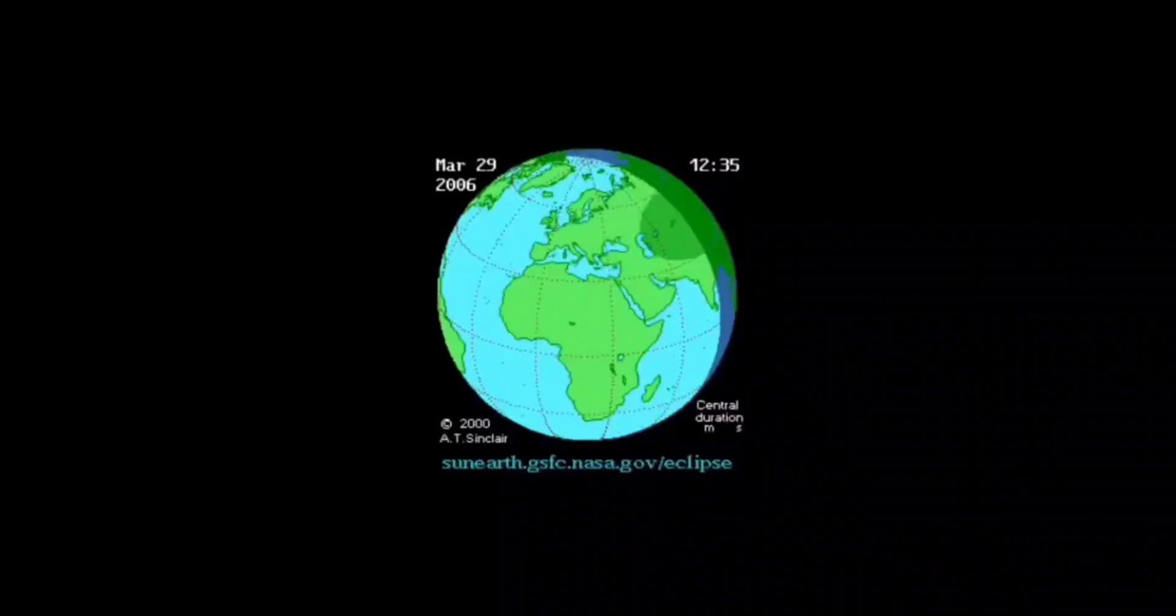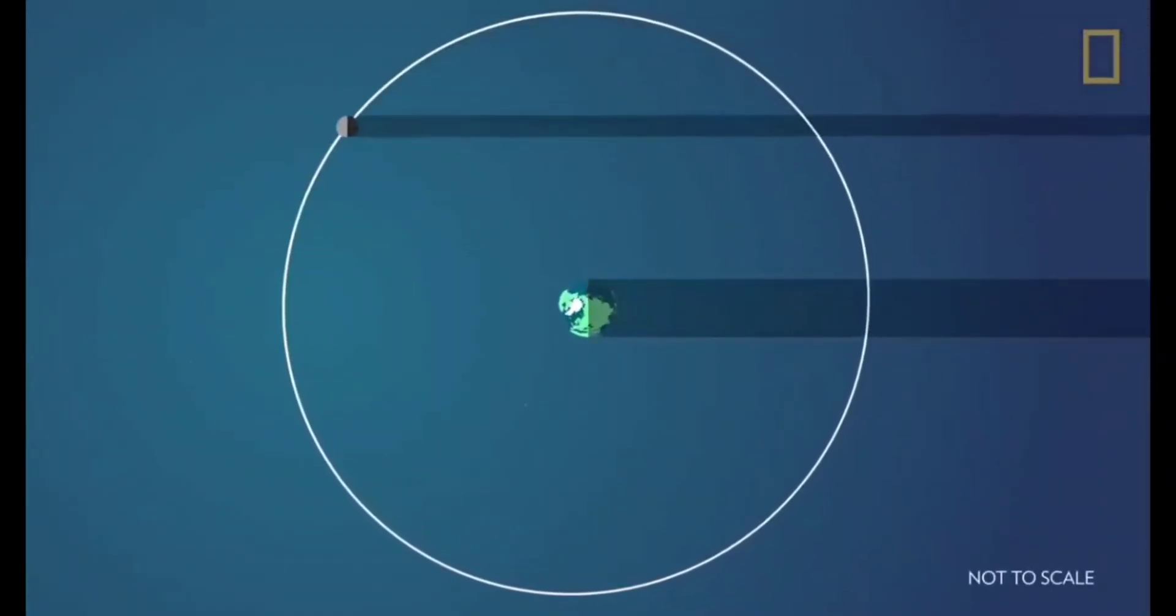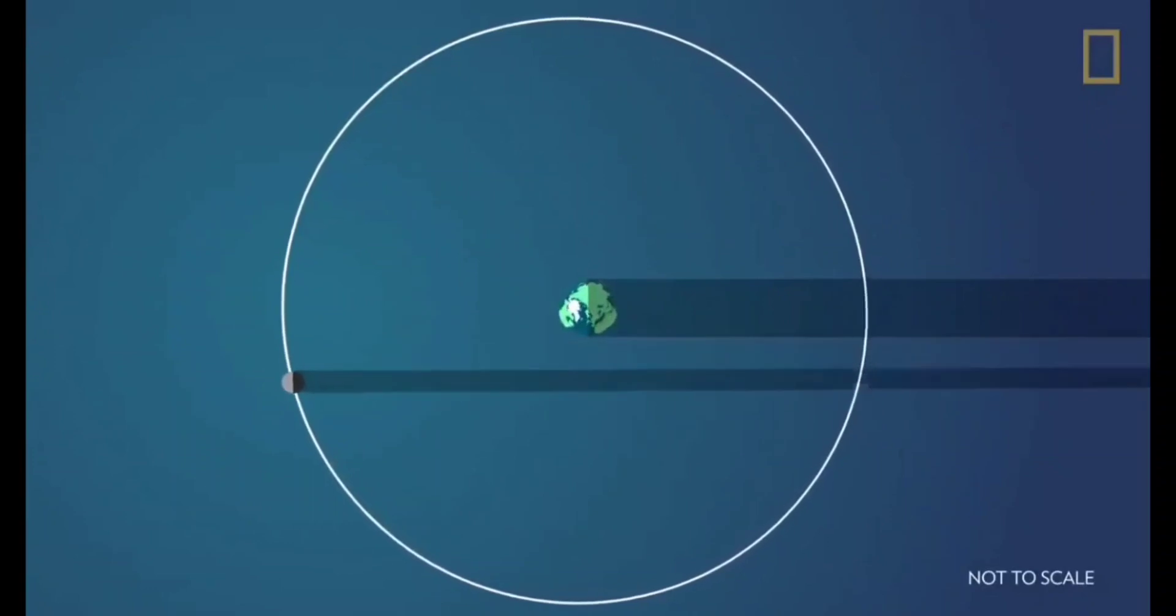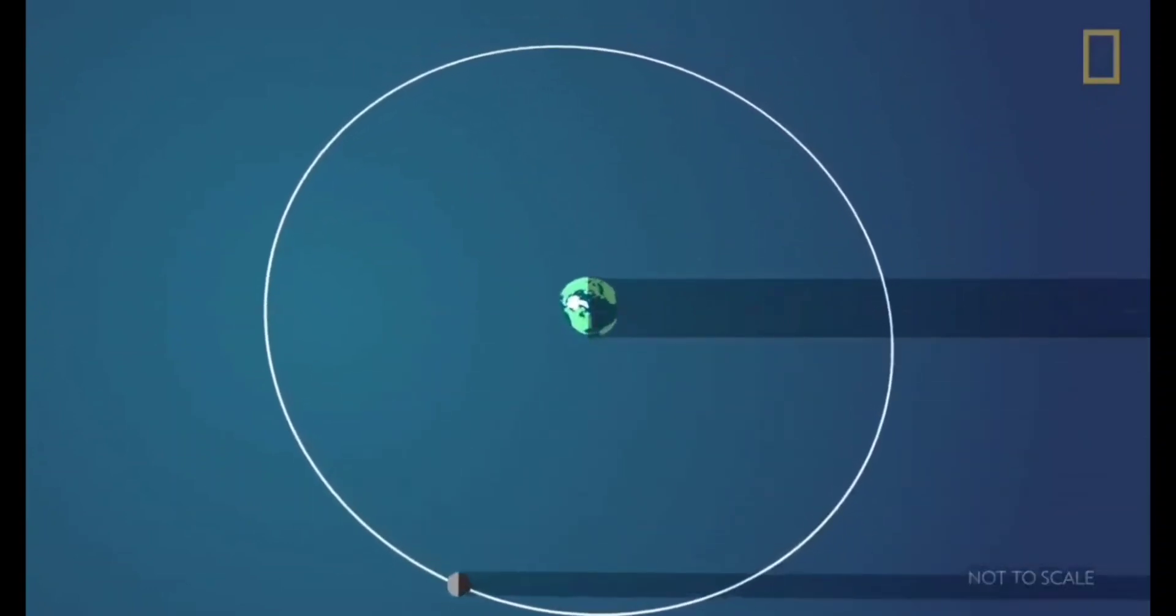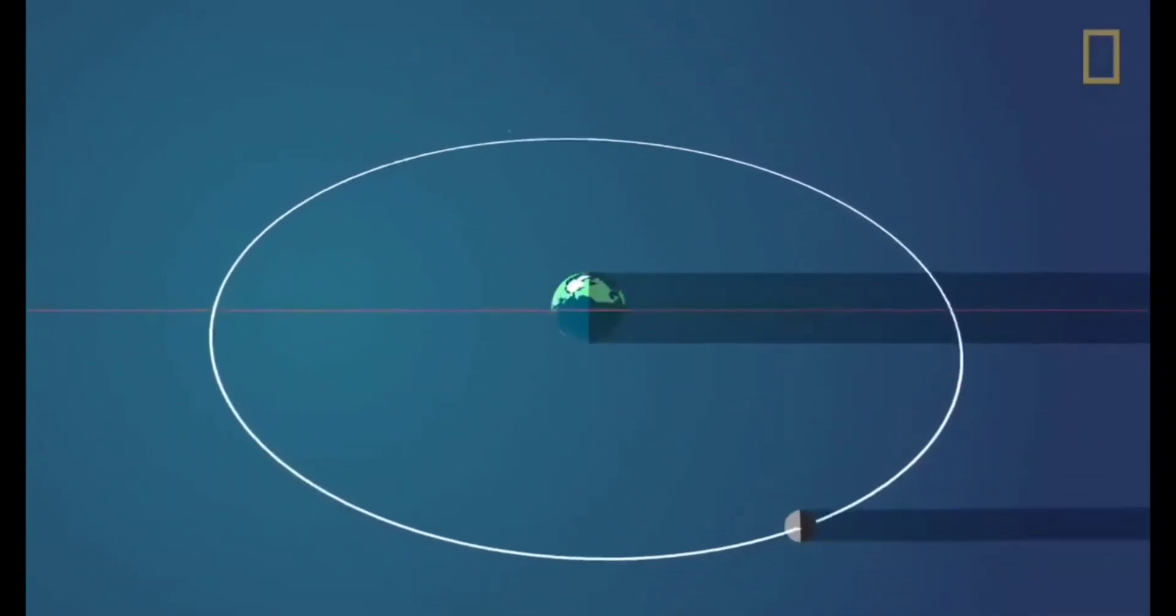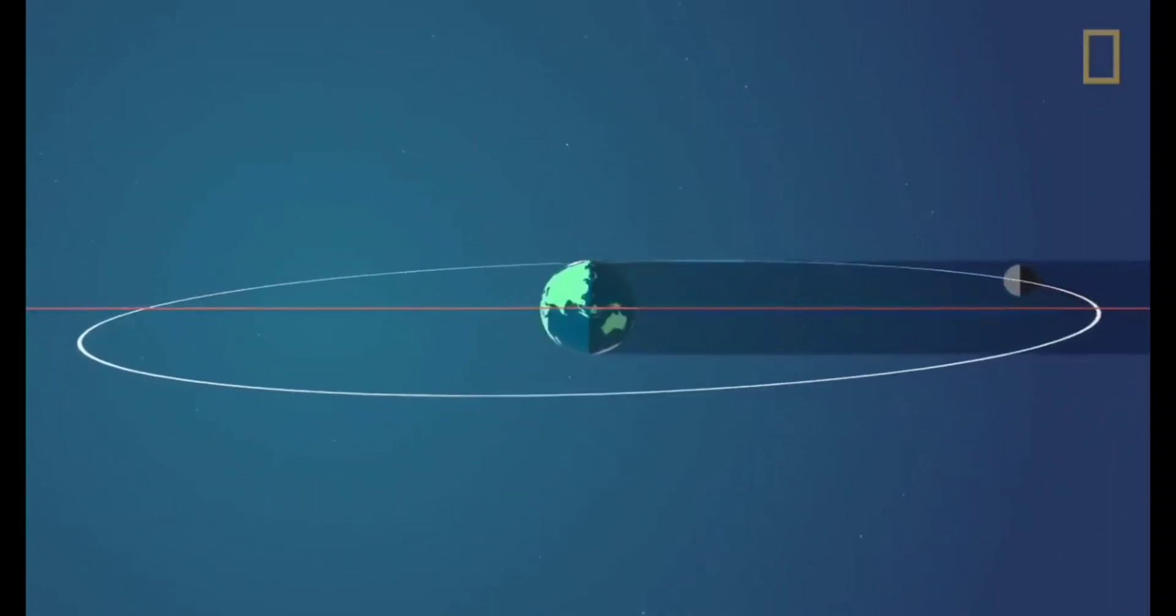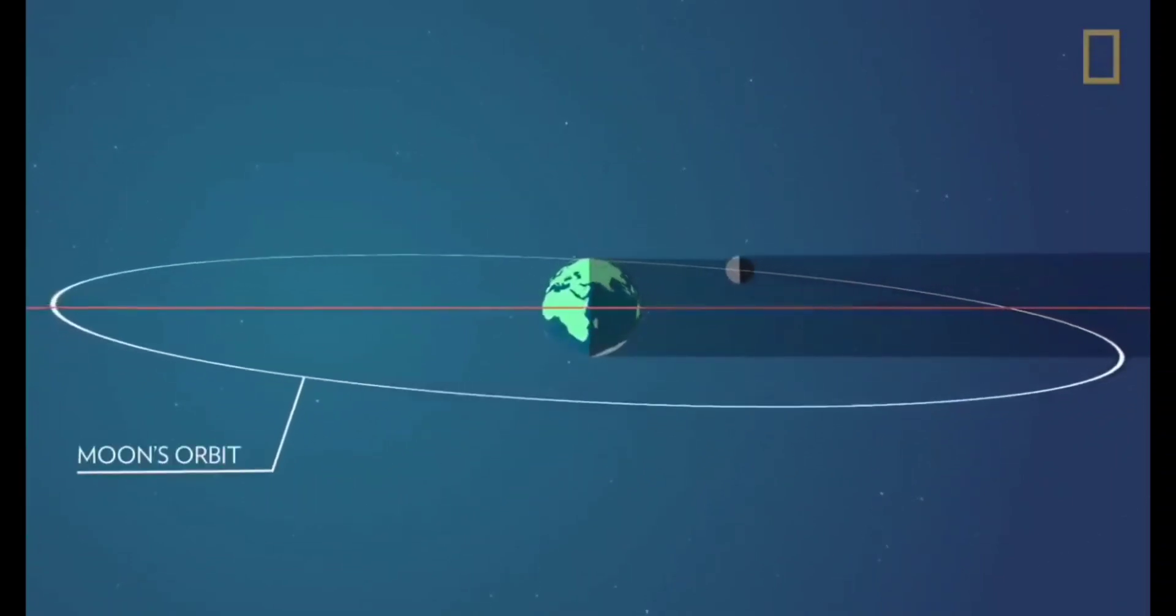We always see that solar eclipse seems to travel from one place to another. This is because the earth continuously rotates around its axis while it orbits the sun and the moon orbits the earth.